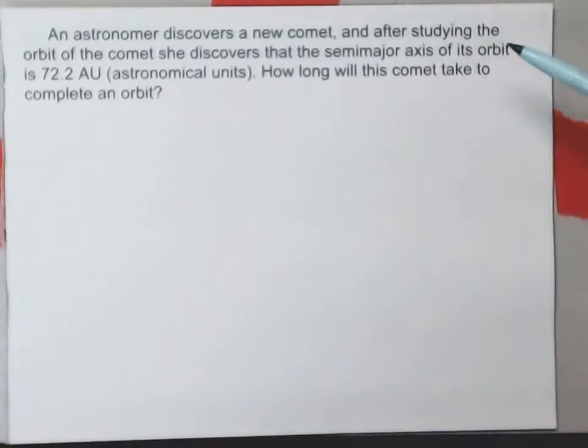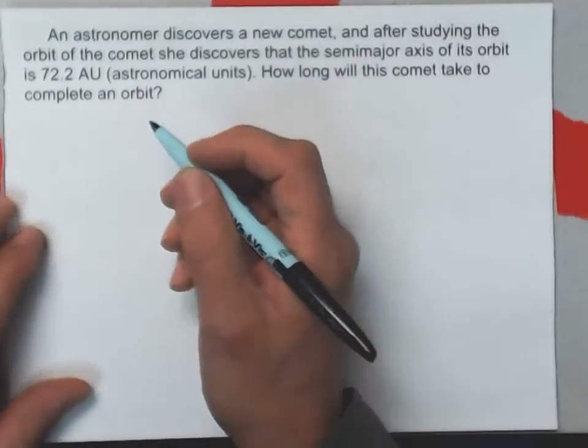So let's read this. An astronomer discovers a new comet, and after studying the orbit of the comet, she discovers that the semi-major axis of its orbit is 72.2 AU (astronomical units). How long will this comet take to complete an orbit? Here's what I would write for a solution.